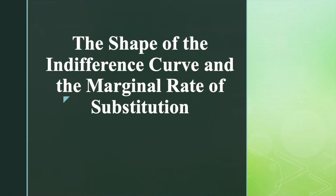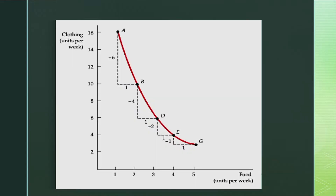Today, let's talk about the shape of the indifference curves and marginal rate of substitution. I have explained in the previous video that indifference curves are downward sloping. It is because of the assumption that more of a good is better than less. First, let's move on to the shape of the indifference curve or IC.